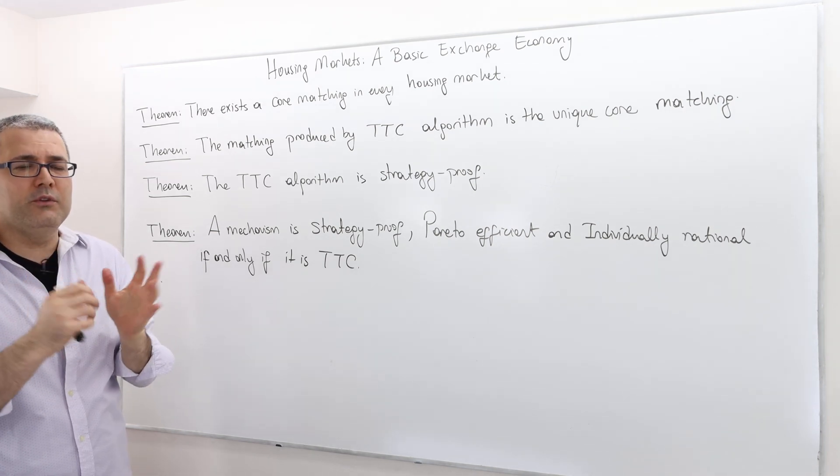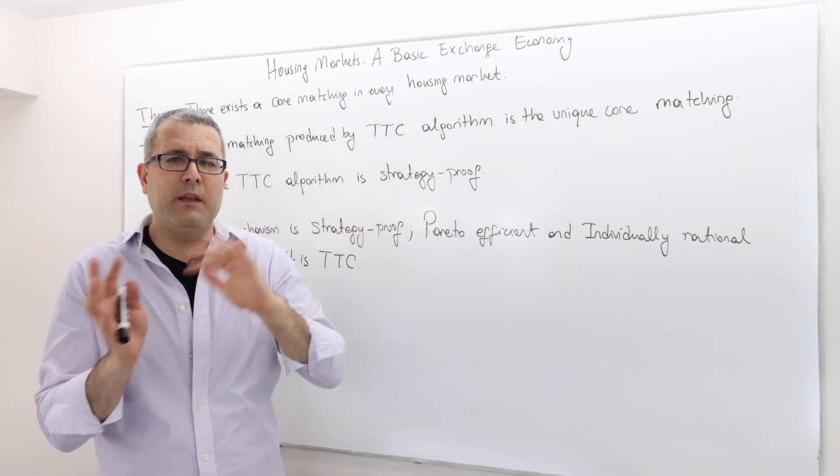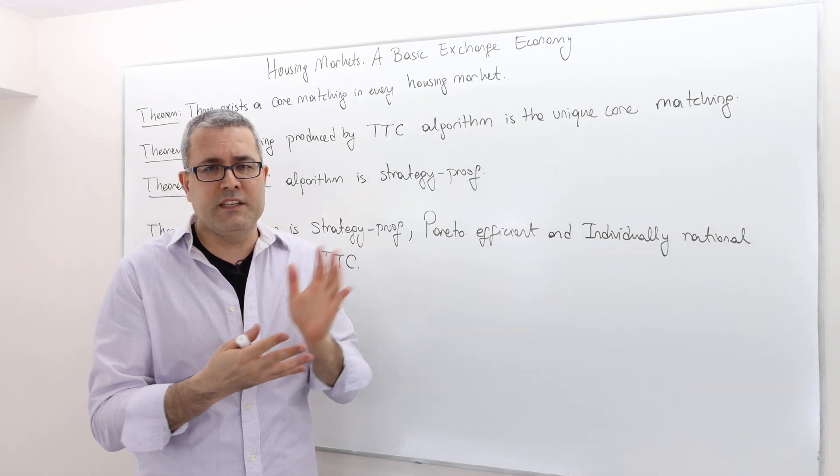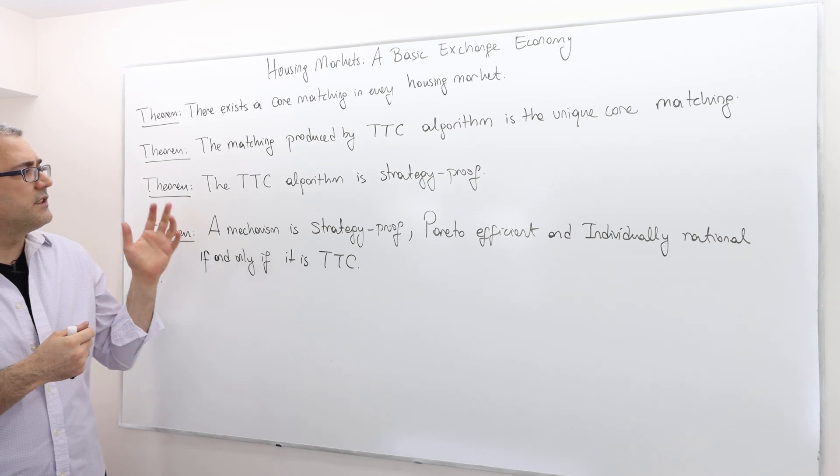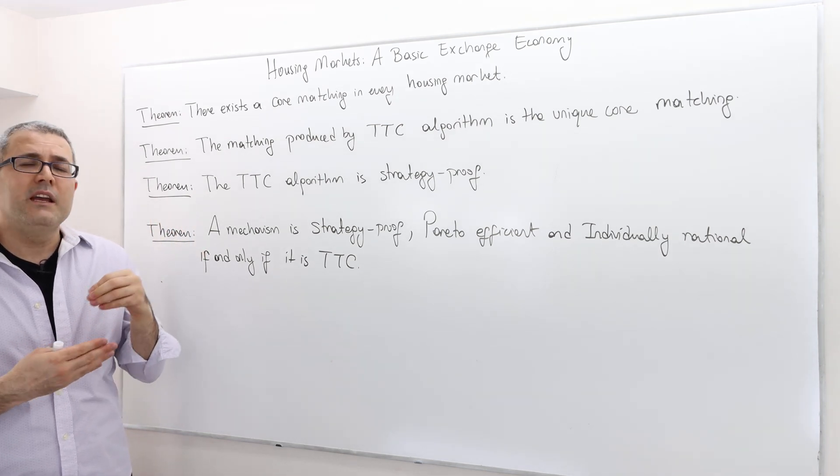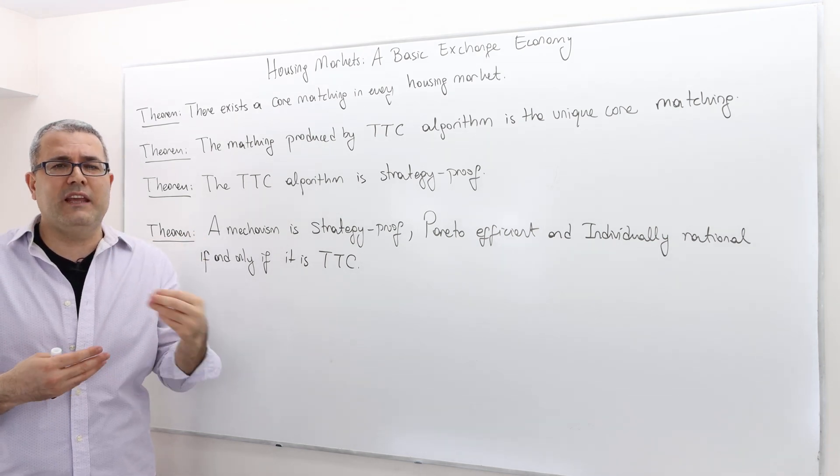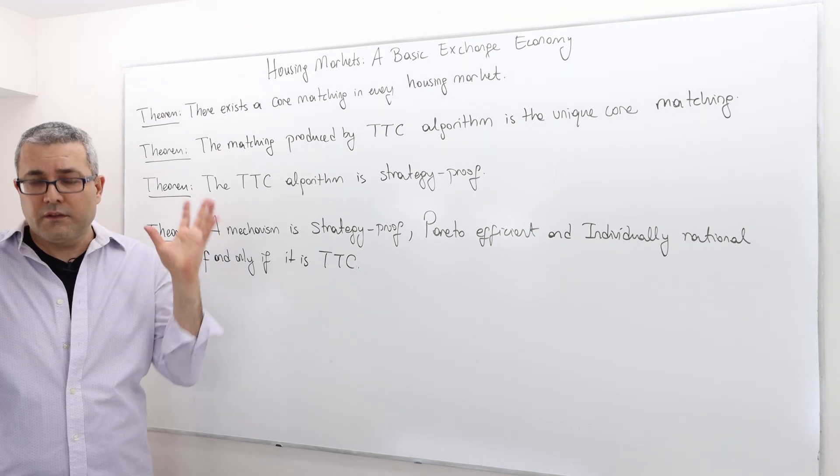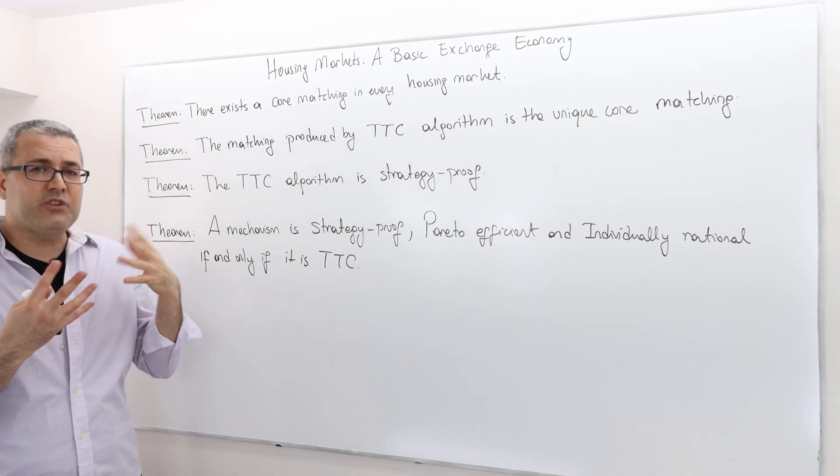I hope you catch the fact that I'm using algorithm and mechanism interchangeably. And yes, whenever I say algorithm, I actually mean mechanism. So the next theorem says the TTC, the top trading cycle algorithm or the mechanism, is in fact strategy proof. So if you ask the agents how do you rank the houses, they actually have no incentive to lie. So that's perfect. The mechanism is strategy proof.